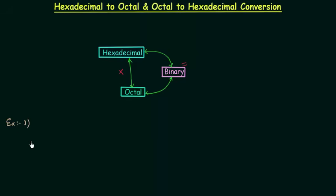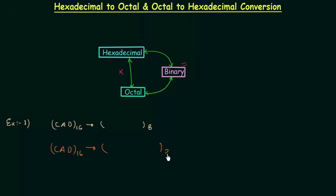Example number 1: we want to convert hexadecimal number CAD to octal. To convert hexadecimal to octal, first we convert hexadecimal to binary. So we will convert CAD to binary first. C is 12, and 12 is represented by 1100 — the 4-bit equivalent binary number.